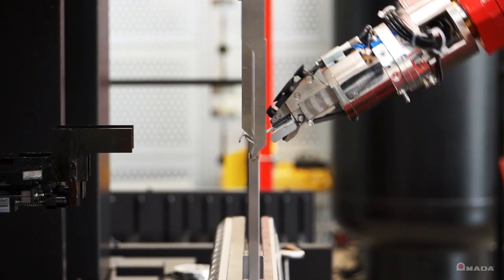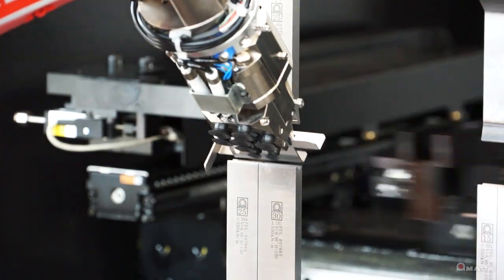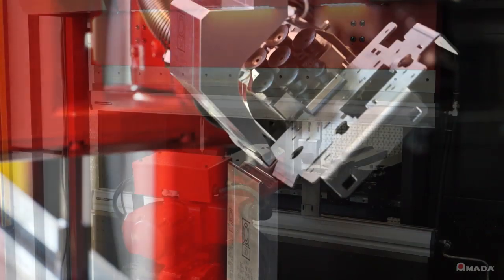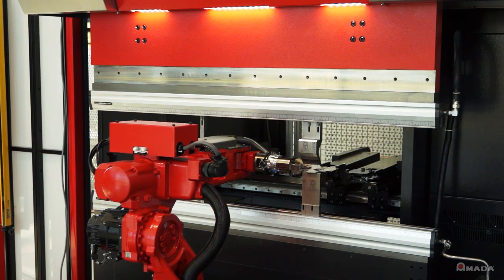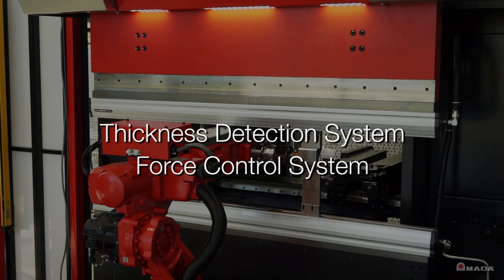The robot moves at a consistent speed with the upper beam to follow a part's pivot point. This eliminates back bending and unstable bend angles. Other features that help achieve consistent bend angles include the thickness detection system and force control system.